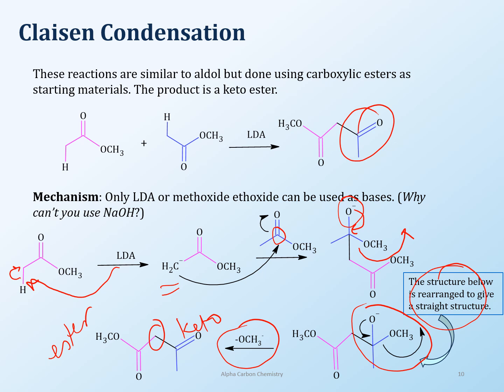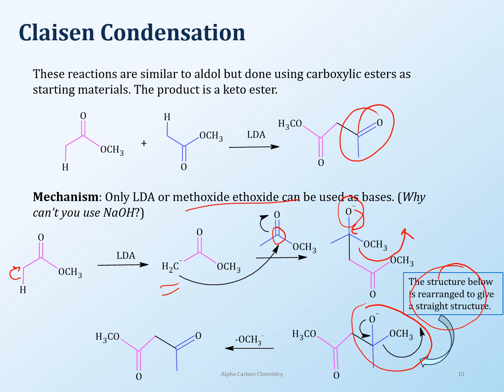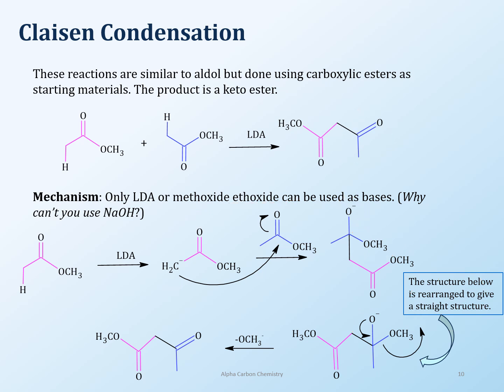The methoxide is the leaving group here. From what we've learned, methoxide is a great nucleophile and a strong base — you can use ethoxide or methoxide as bases too. But they are not as strong as LDA, which is why methoxide can act as a leaving group. So with ethoxides or methoxides as the base, this can leave no problem. With LDA being so strong, this is a good leaving group as well. So the mechanism is clear, and this is a Claisen condensation between two esters.